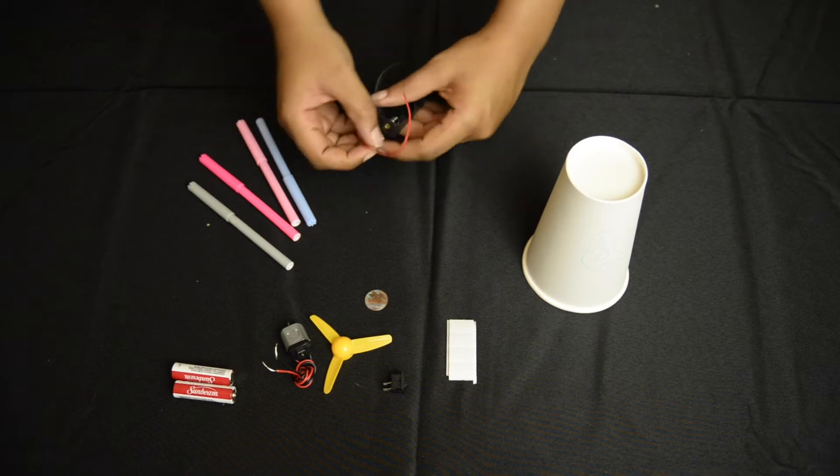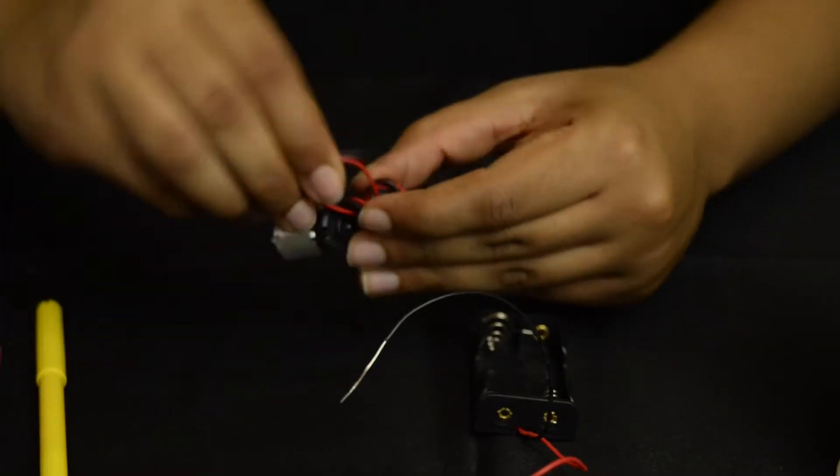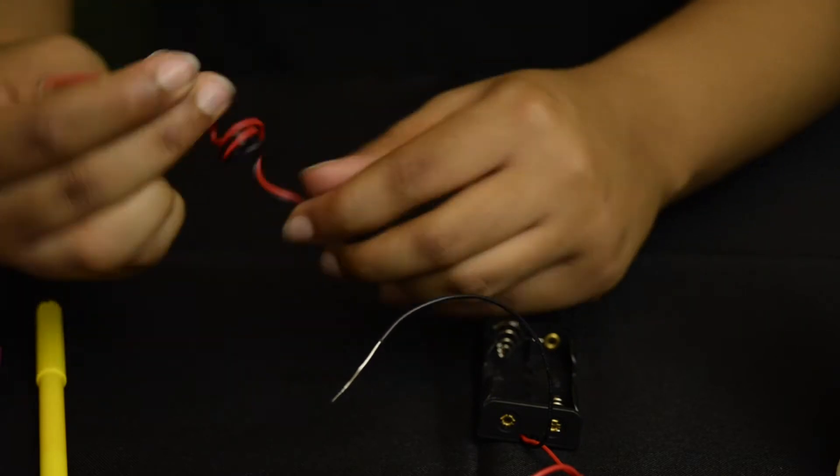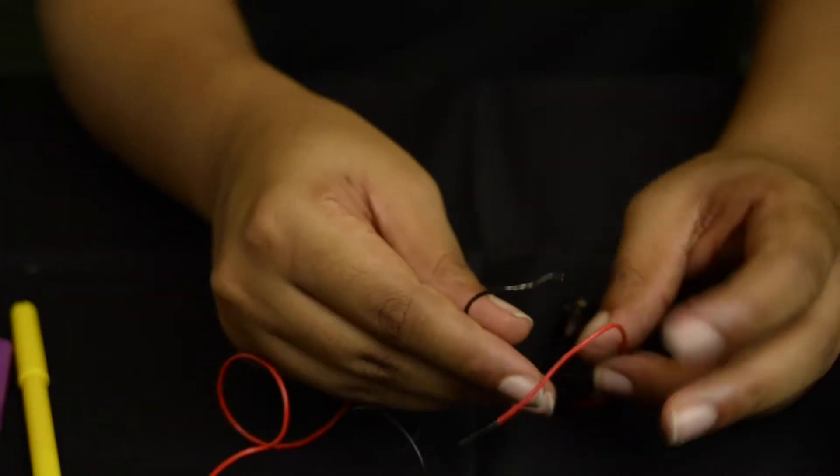Step two: start building the circuit. Both the motor and the battery pack have a red and black lead wire. Make sure to match the red with the red and the black with the black on the circuit.